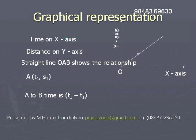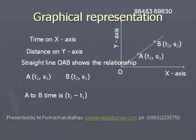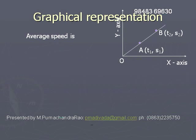At A, the time is t1, and at B, the time is t2. So the time taken for the motion from A to B is t2 minus t1, and the distance travelled from A to B is s2 minus s1. Hence, the average speed is (s2 minus s1) divided by (t2 minus t1).